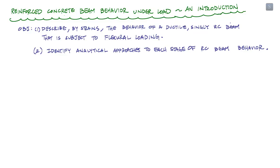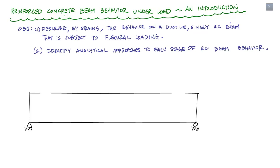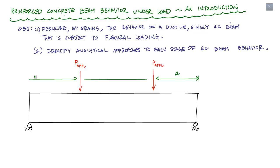Let's start by considering a simply supported reinforced concrete beam loaded by two concentrated forces, each called P applied, with some distances between them. The term 'singly' implies reinforcement only on the tension side of the beam. For this loading, the bottom is in tension, so we have reinforcement along the bottom — represented by a dotted line. From symmetry, each reaction at the supports is also equal to P applied.